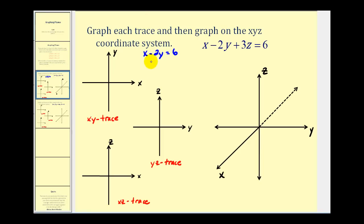Now to graph this line in standard form, we can go ahead and find the intercepts. If we set y equal to zero, x would be equal to six — that would be our x intercept. If we set x equal to zero, y would have to be negative three — that would be our y intercept. So this plane cuts the xy plane along this line here.